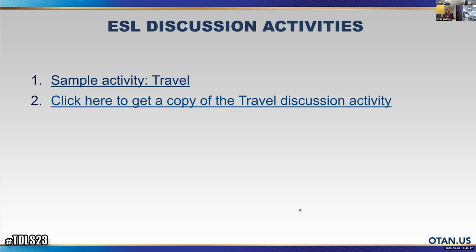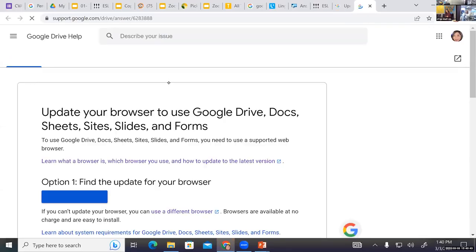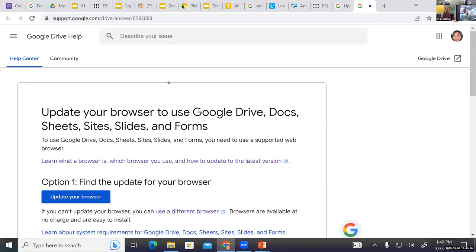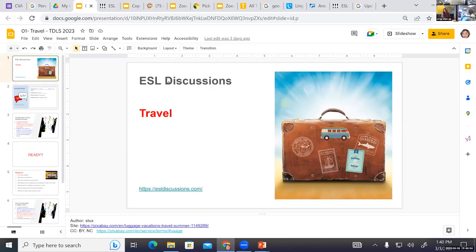I'm going to take you to a sample activity — this is your own copy, so when you click on it, it opens a Google copy you can do whatever you want with. Here are my actual slides I use. I go through the first four slides with the whole group, introducing the topic — for example, travel. I tell them as soon as you go into the breakout rooms, you're going to introduce yourselves; these are the questions you're going to ask each other.